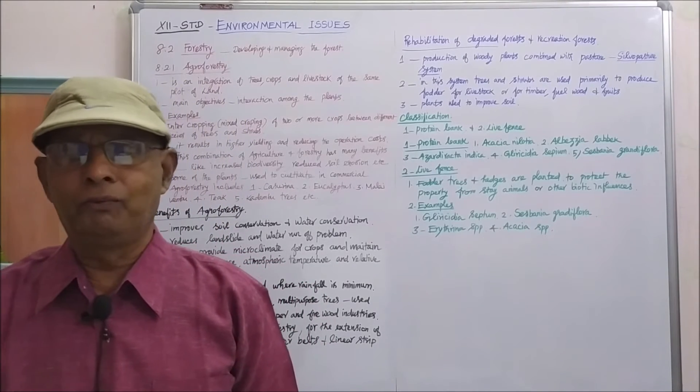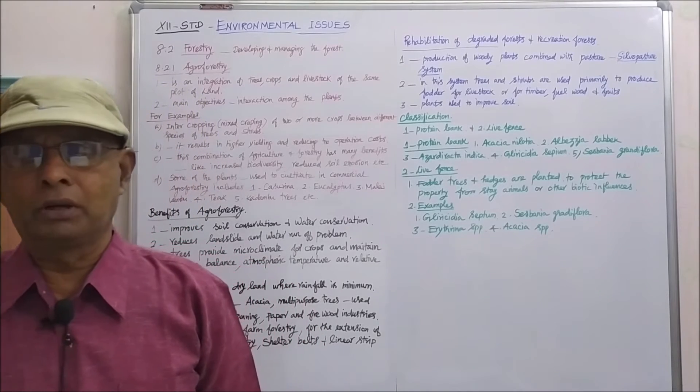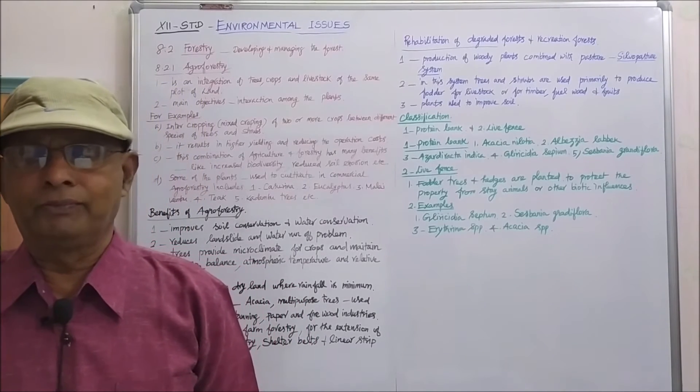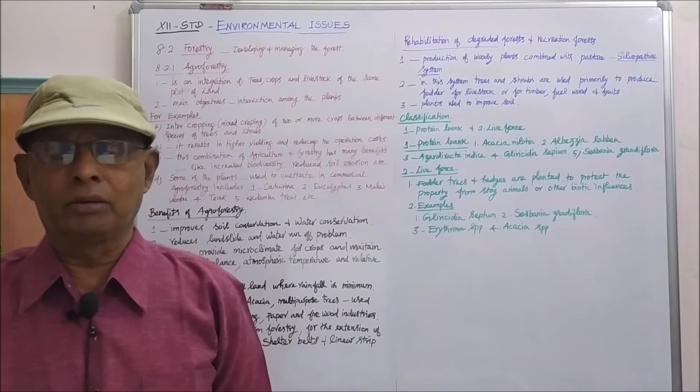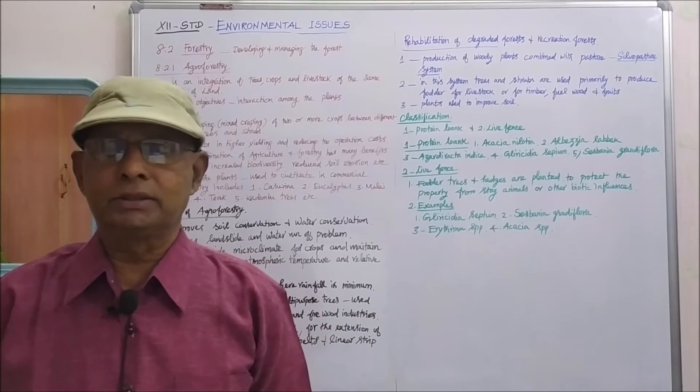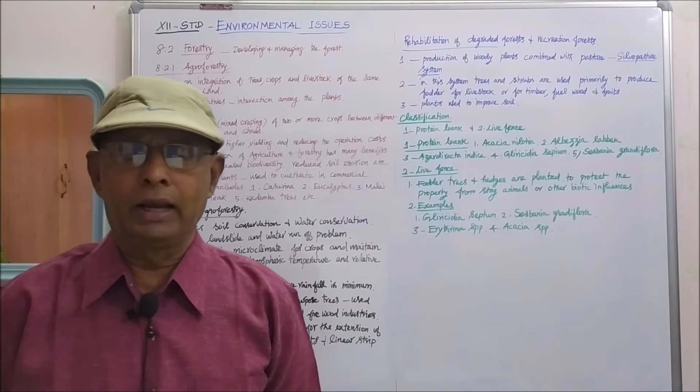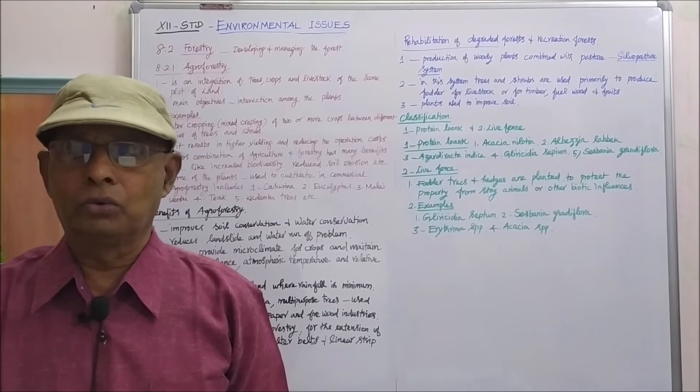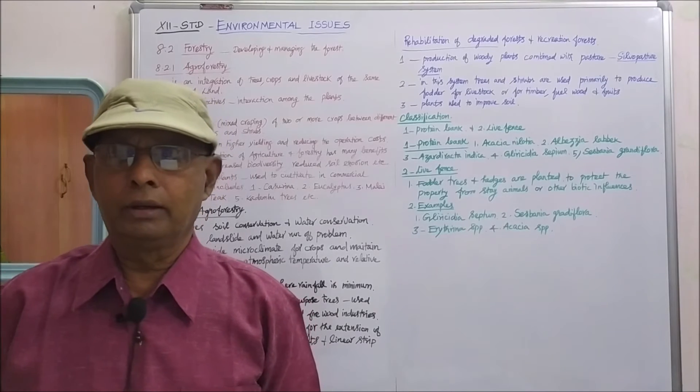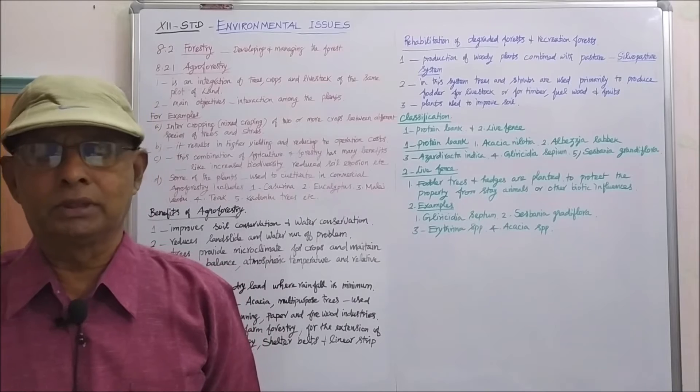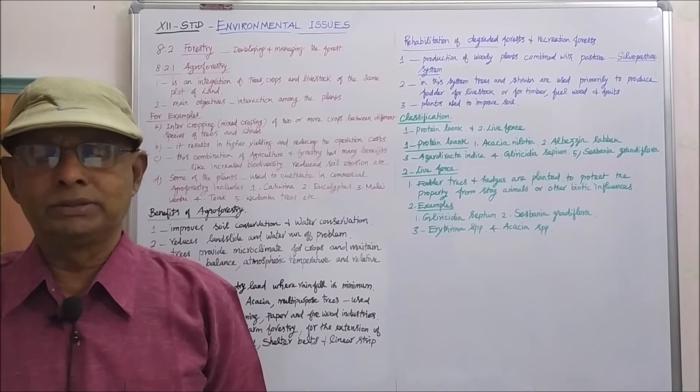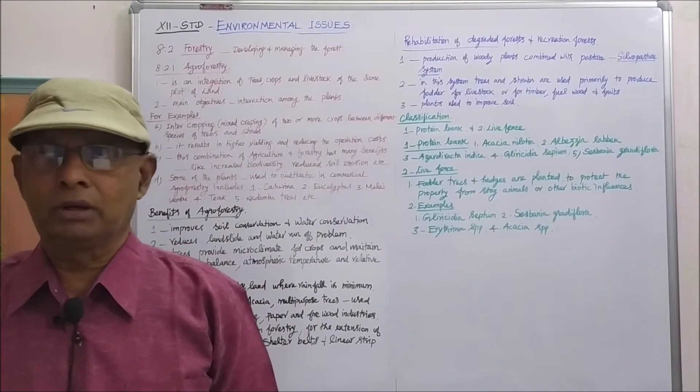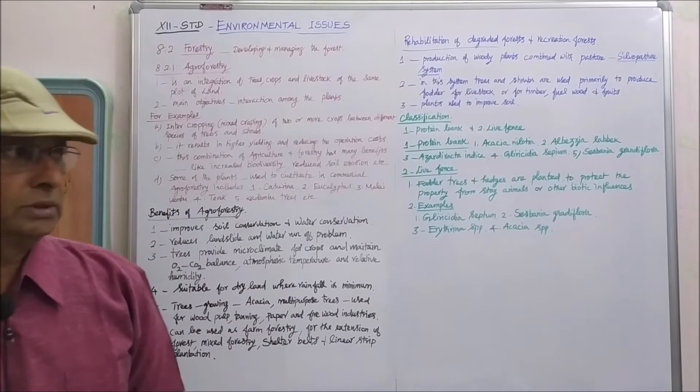Next, leaf fence. Various fodder trees and hedges are planted as leaf fence to protect the property from stray animals or other biotic influences. Hedges is a line of closely spaced shrubs and sometimes trees planted in the form of linear strip to mark the boundary between the neighboring property. Example, gliricidia sepium, sesbania grandiflora, erythrina species and acacia species are used as leaf fence.